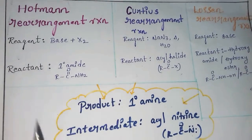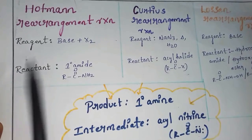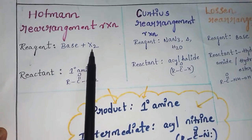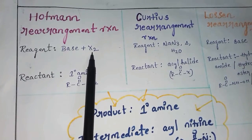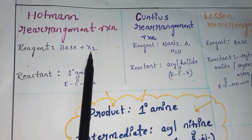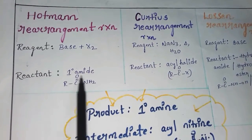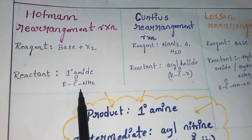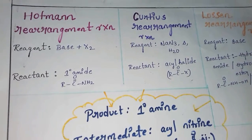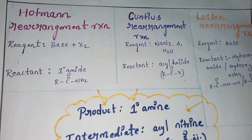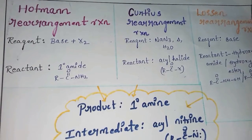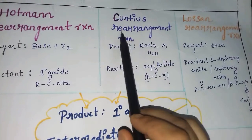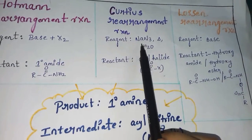Let's start. First is the Hofmann rearrangement reaction. The reagent is base plus halogen — X2 means halogen, so you can use Cl2 (chlorine), Br2 (bromine), or I2 (iodine). The reactant is a primary amide. We need to remember that secondary amide or tertiary amide cannot be used — only primary amides are involved.